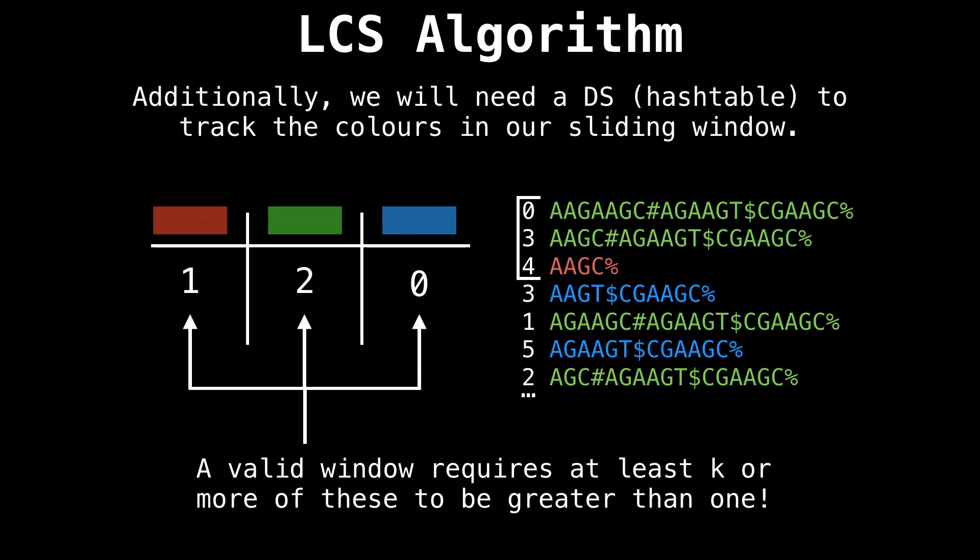So to implement the sliding window, we will also need an additional data structure to keep track of the colors in our window. I recommend using a hash table for this task. On the bottom left, I drew a table to indicate how much of each color we are capturing. In the current window, a valid window will require at least k or more columns to have a value greater than zero.